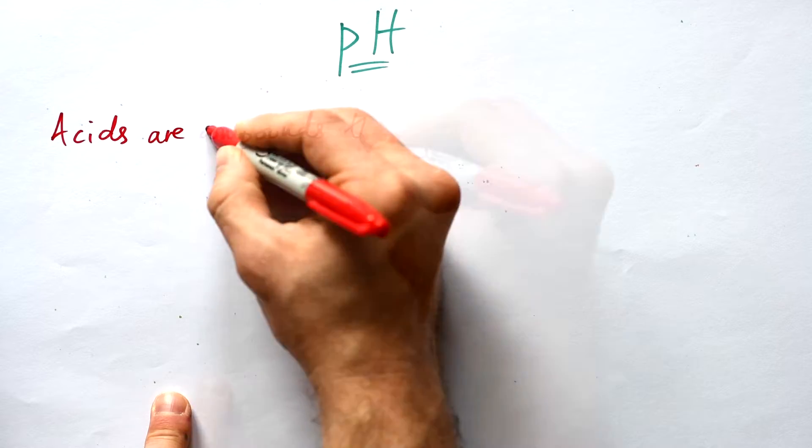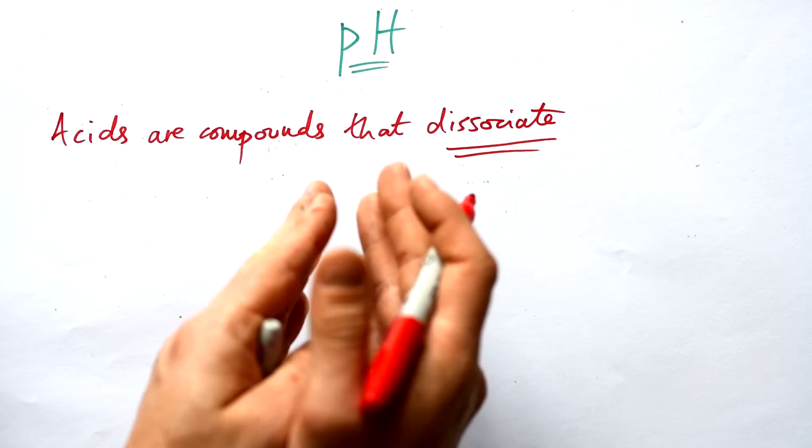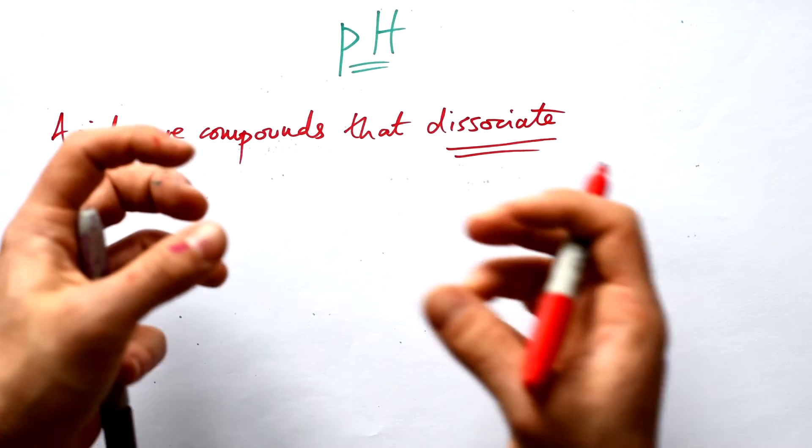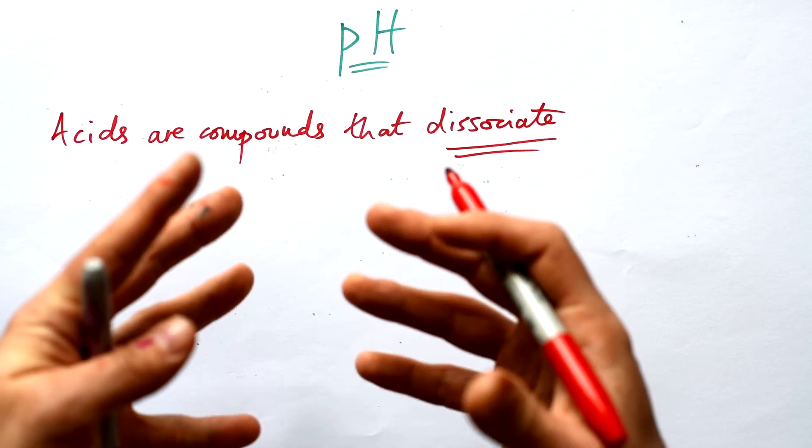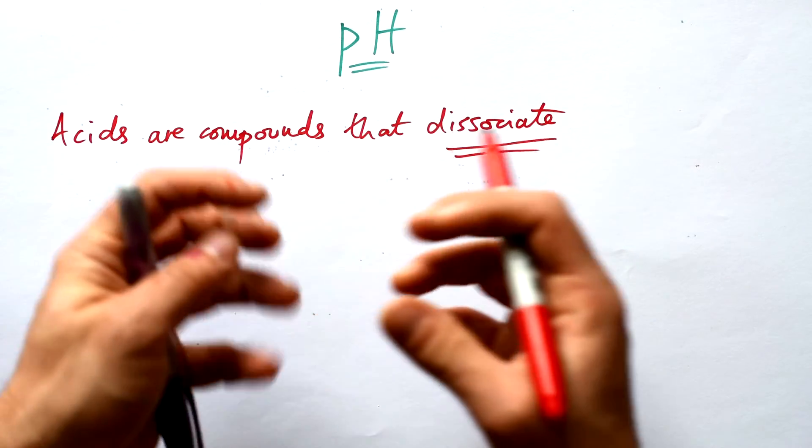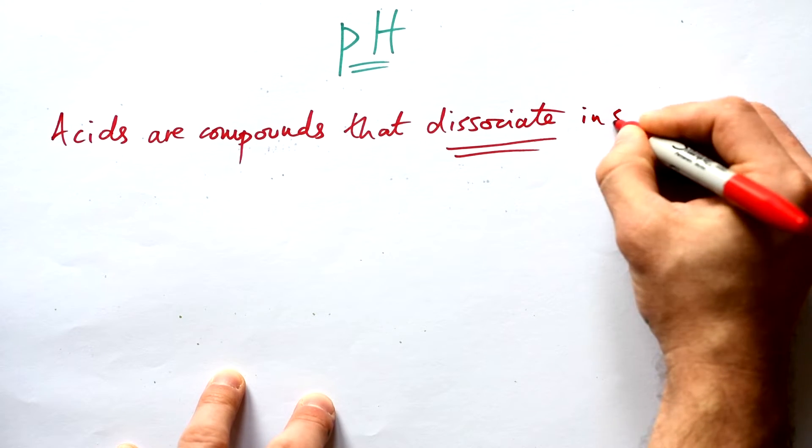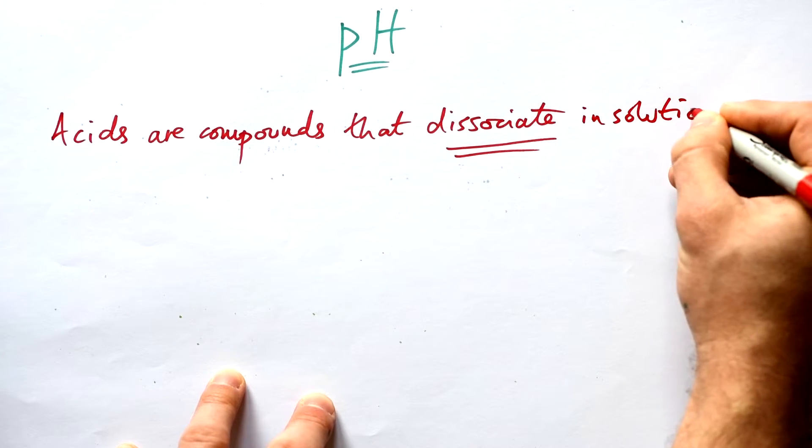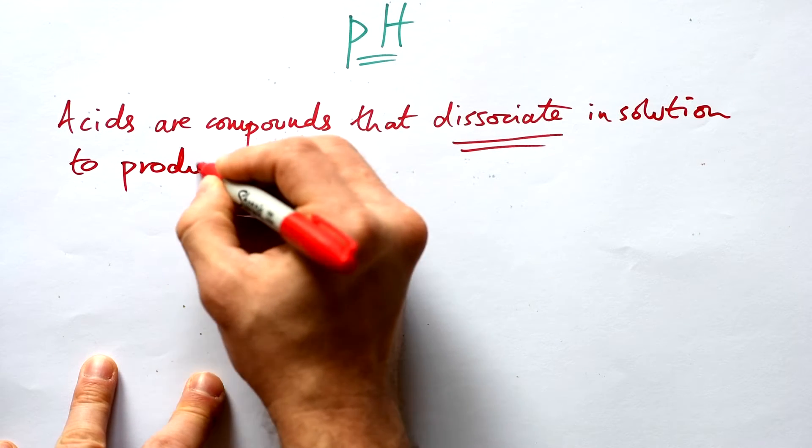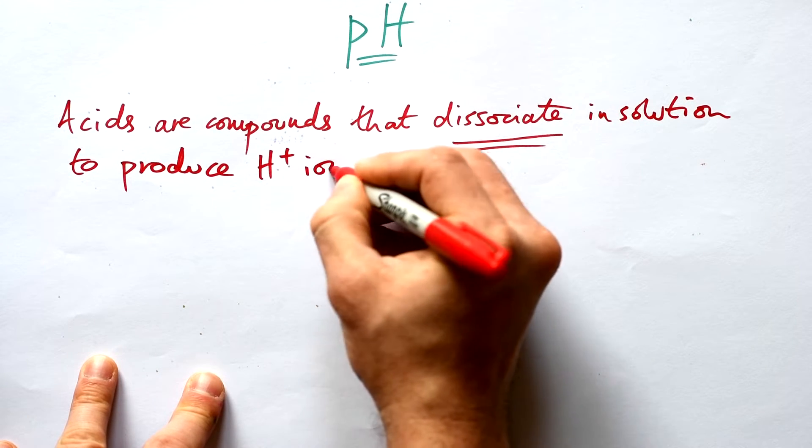Acids are compounds that dissociate—in other words, the atoms are pulled apart a little bit, not completely such that it makes a brand new chemical, but we say they're not as tightly connected as they were. They dissociate in solution, that is in water they're dissolved, and what they do is produce H+ ions.